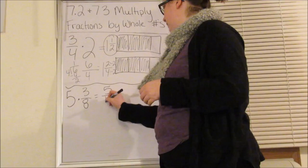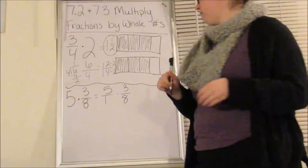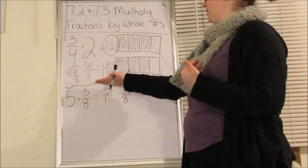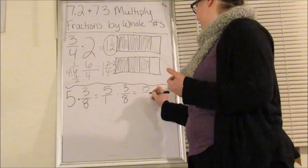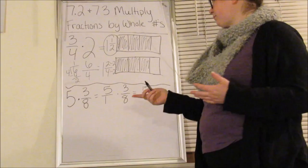When I have a whole number, all I have to do is put it over one. So I have five over one times three-eighths. And now I can just multiply straight across. So five times three is fifteen. One times eight is eight.